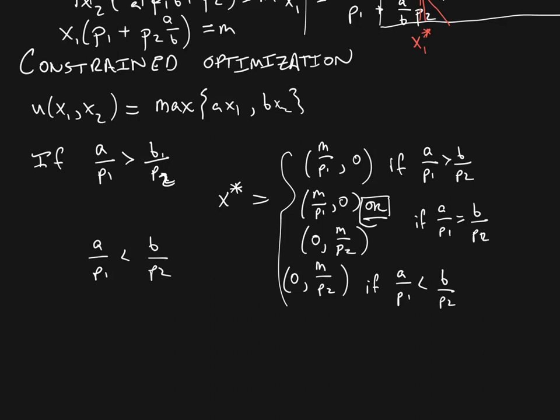So here you have now seen the consumer's choice problem solved for the Leontief utility function and for the related function where we maximize either AX1 or BX2. Hope this helped and we will see you in the next video. Thanks for watching.